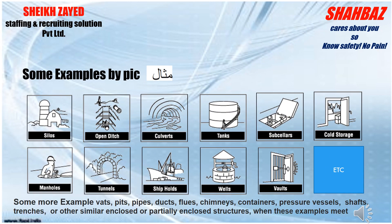Now let's understand the examples of confined spaces. These include silos, open ditches, culverts, tanks, sub-cellars, cold storage, manholes, tunnels, ship holds, wells, walls, and more. Additional examples include wet pits, pipes, ducts, flues, chimneys, containers, pressure vessels, shafts, trenches, and other similar enclosed or partially enclosed structures.